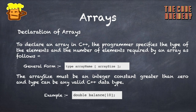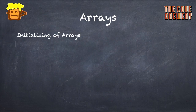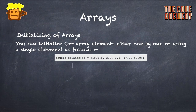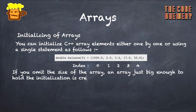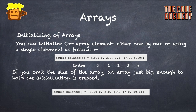For example, writing 'double balance[10]' will store ten values from balance[0] to balance[9]. You can initialize C++ array elements either one by one or using a single statement. For example: 'double balance[5] = {1000, 2.0, 3.4, 17.0, 50.0}'. The element at index 0 is 1000, index 1 is 2.0, index 2 is 3.4, index 3 is 17.0, and index 4 is 50.0. If you omit the size, the array will be just big enough to hold the initialized elements.